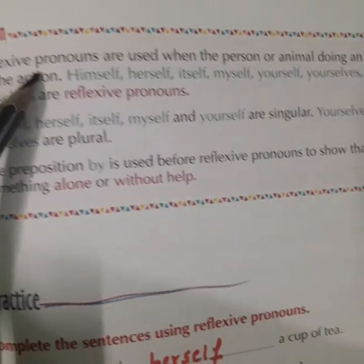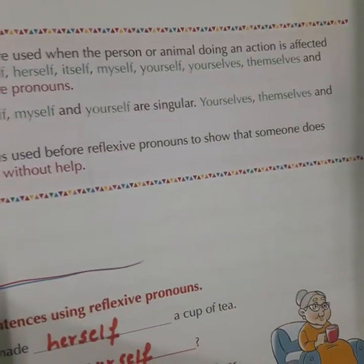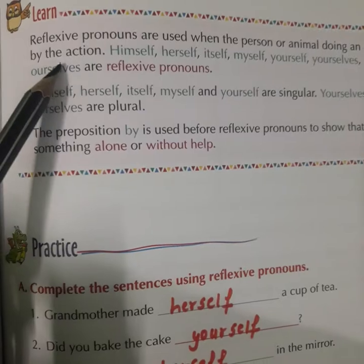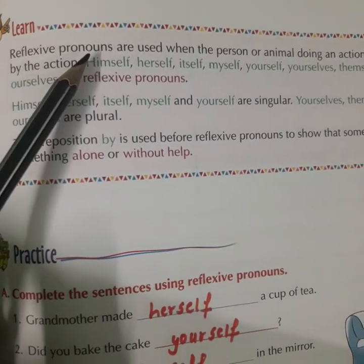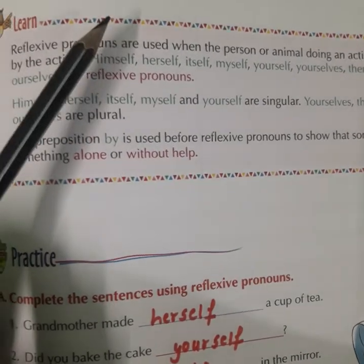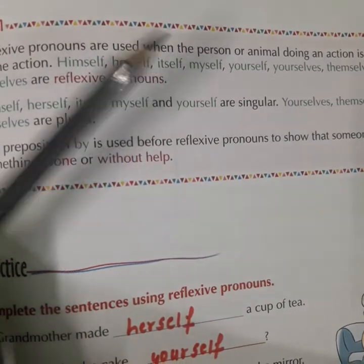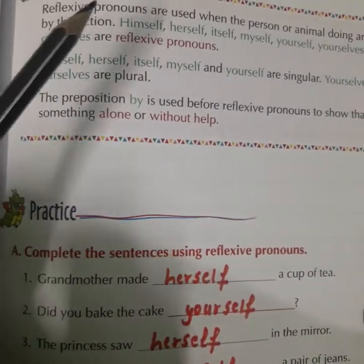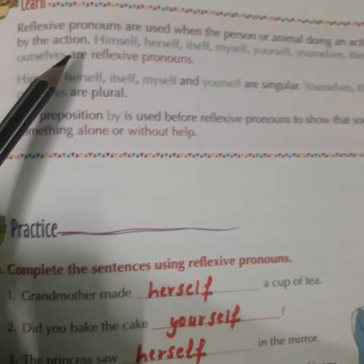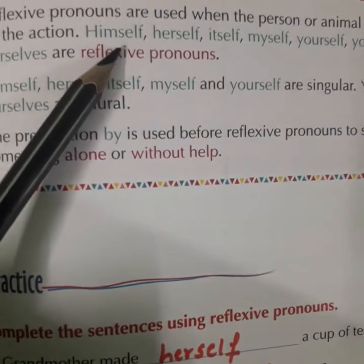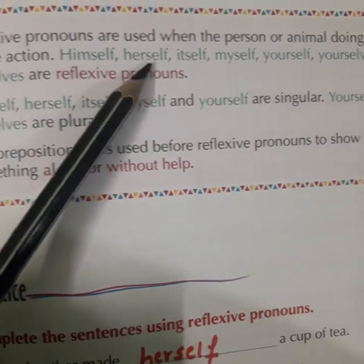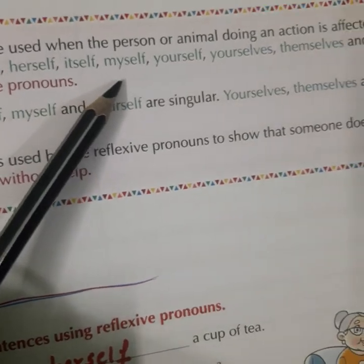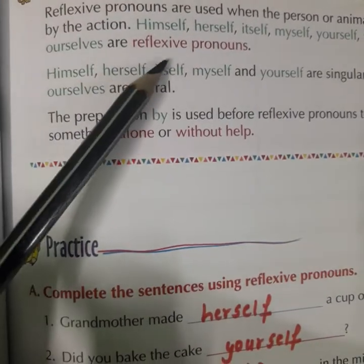Reflexive pronouns are used when the person or animal doing an action is affected by the action. For that, we use: himself, herself, itself, myself, yourself, yourselves, themselves, and ourselves. These are the reflexive pronouns.